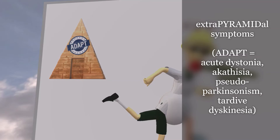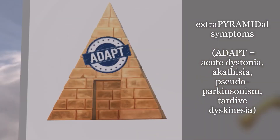On this pyramid we see a logo that says ADAPT — a mnemonic for the extrapyramidal symptoms. AD is for acute dystonia, which includes muscle spasms specifically in the face, neck, and back, stiffness, and oculogyric crisis; treatment includes benztropine and diphenhydramine. A is for akathisia — restlessness — treated with beta blockers, benztropine, and benzodiazepines. P is for pseudoparkinsonism or bradykinesia, treated with benztropine and amantadine. T is for tardive dyskinesia, which we treat with atypical antipsychotics such as clozapine.